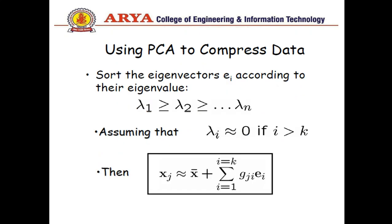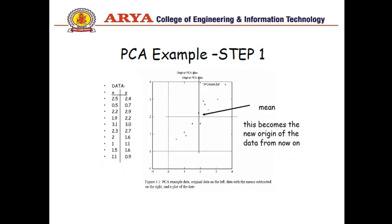Using PCA to compress data we sort the eigenvectors according to their eigenvalues. Here I am taking a numerical example that is based on principal component analysis. In this case we have given two data sets x and y, so this is a two dimensional data set example.